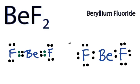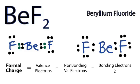But which one of these is the correct structure? To answer that, we can use formal charges. So let's calculate the formal charge on each atom.